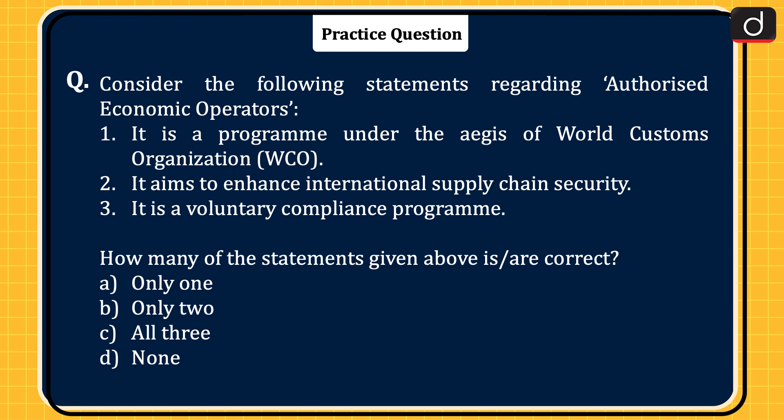Now it's time for the practice question. Consider the following statements regarding Authorized Economic Operators. 1. It is a program under the SAFE Framework of the World Customs Organization. 2. It aims to enhance international supply chain security. 3. It is a voluntary compliance program. How many of the statements given above is/are correct — only one, only two, all three, or none? Send your answer in the comment section. Stay tuned for the next episode. Thanks for watching.